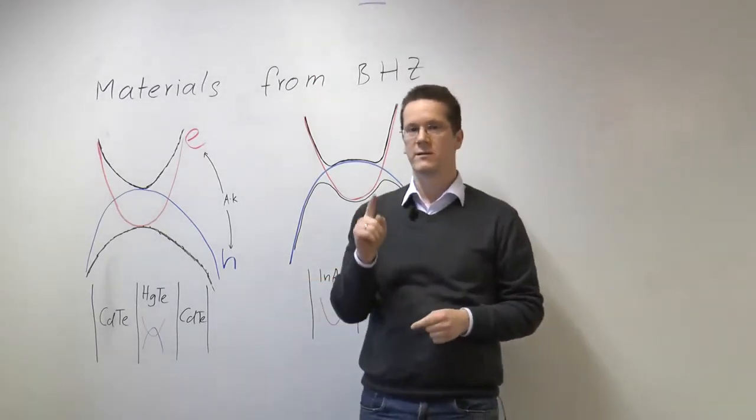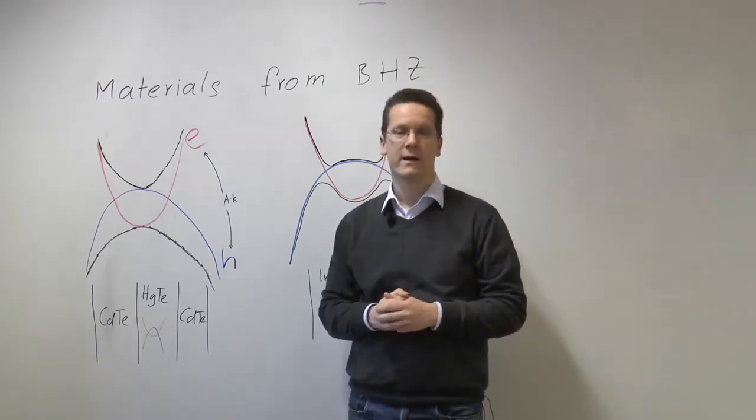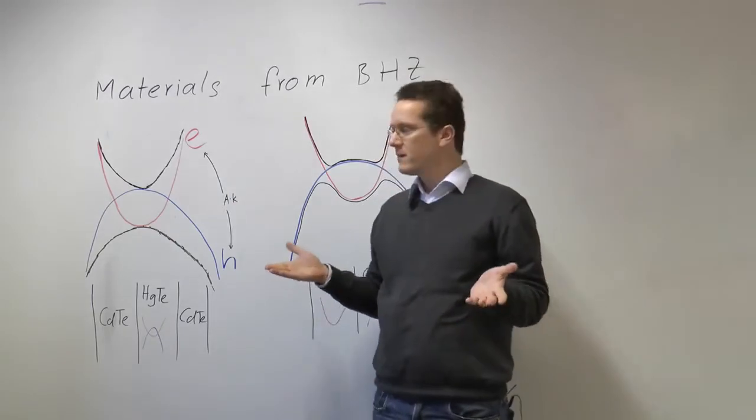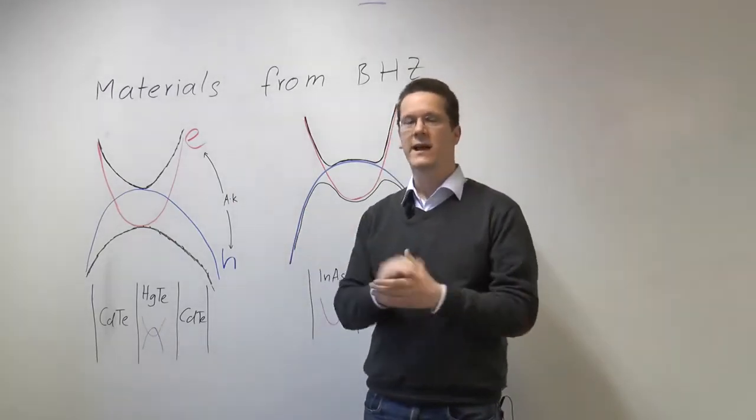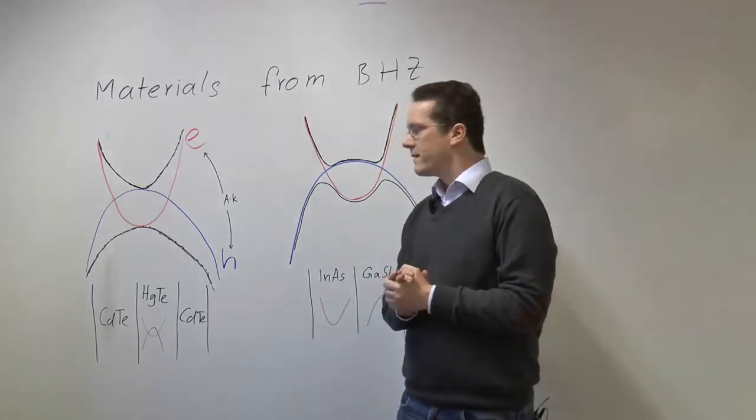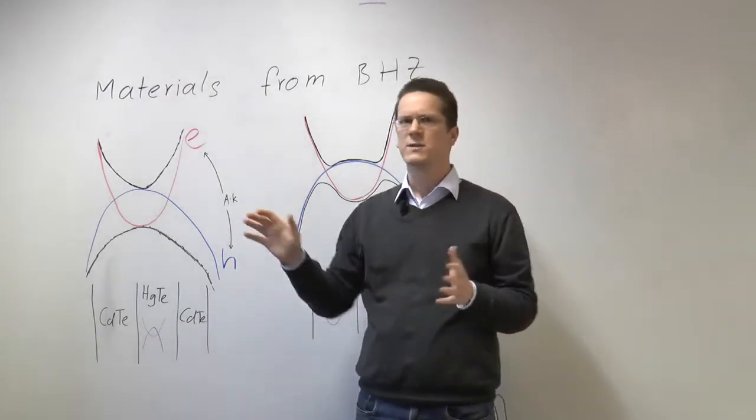But it turns out that there's one semiconductor in nature, namely mercury telluride, that's an alloy of mercury and tellurium, that has this band inversion quite naturally. So this in principle is a natural candidate material for a topological insulator. Now it turns out that there are some complications because this mercury telluride has some other bands which spoil the gap.